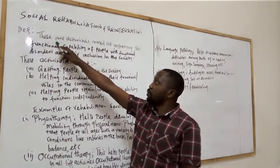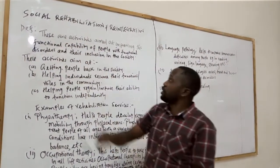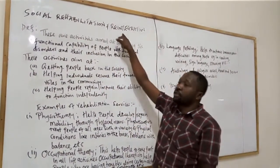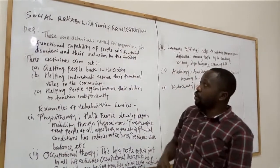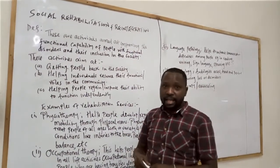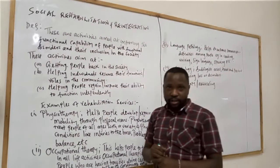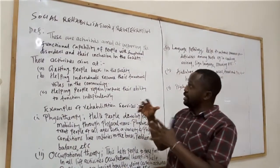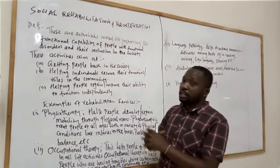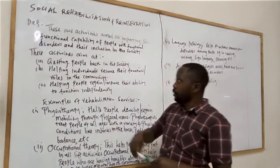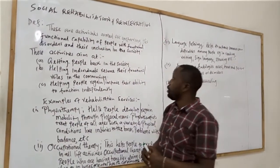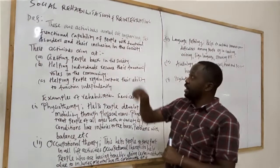We'll start with the definition of terms. We'll define what rehabilitation is and also what integration is. When we talk about rehabilitation, it refers to the temporary assistance that is given to individuals in the society. Remember this assistance or help is not permanent, but it is just temporary, just to bail out these individuals from the problem that they are going through. These are activities aimed at improving the functional capability of people with functional disorders.